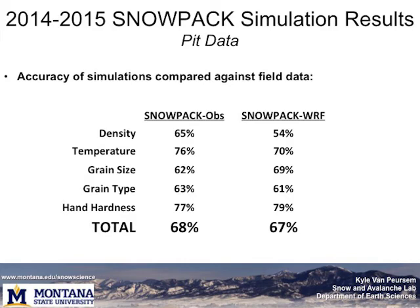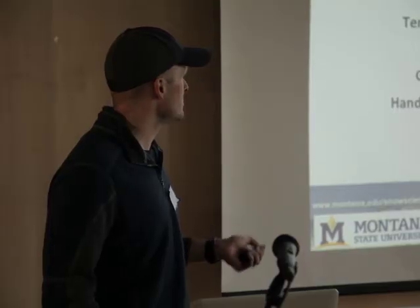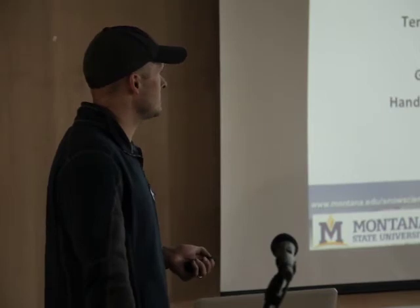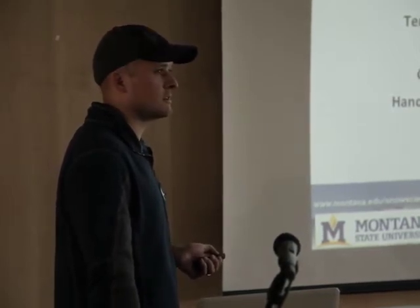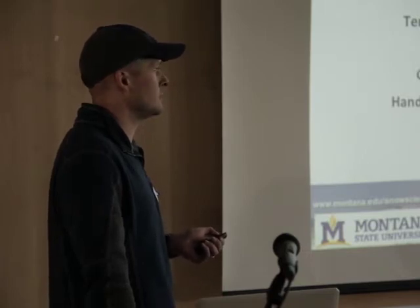For the actual pit data, we calculated accuracy compared to 19 field days and compared two simulations using different inputs. For density, observed data was a little better. Same with temperature. Grain size — WARF actually had slightly better accuracy. Grain type was pretty similar, and hand hardness was slightly better with WARF. Overall, if you combine all parameters, the accuracy between the two simulations was pretty even. Besides snow depth, if you look at the microstructure of the snowpack, accuracy is still pretty even regardless of input type, which is encouraging for operational use.